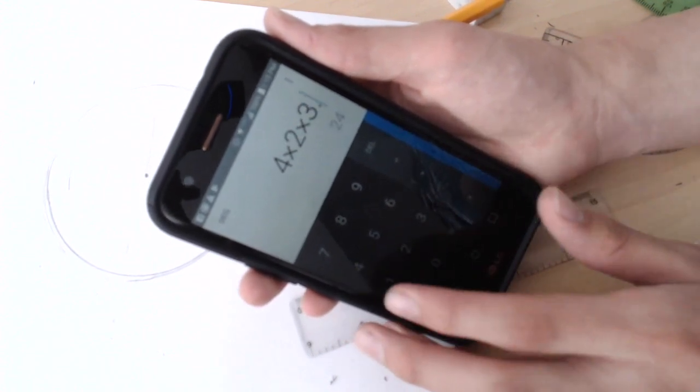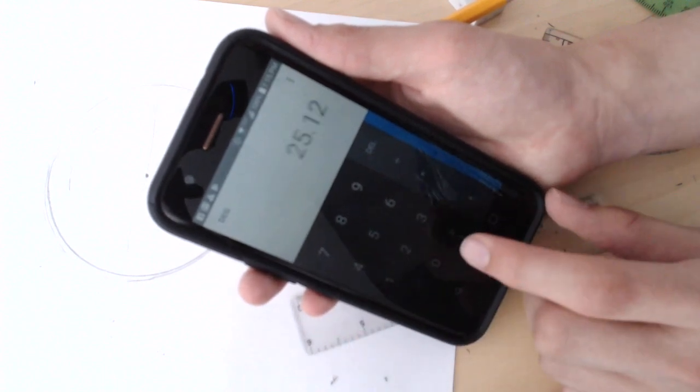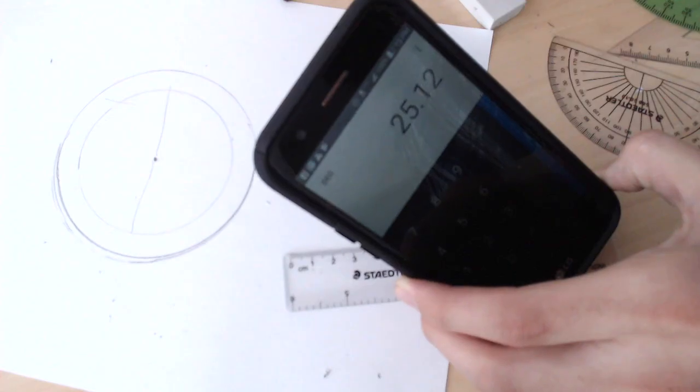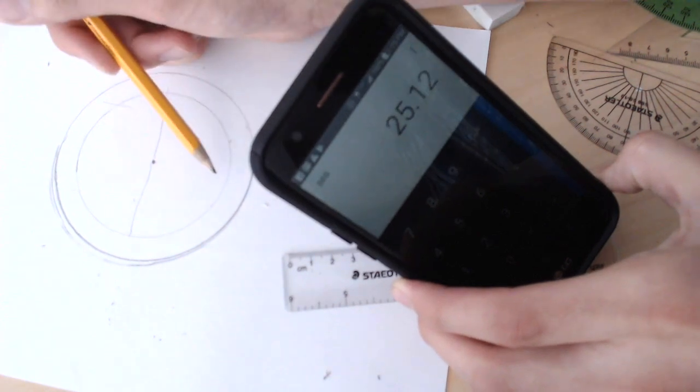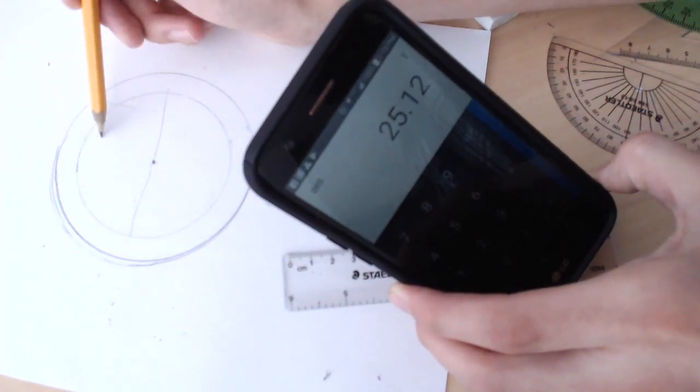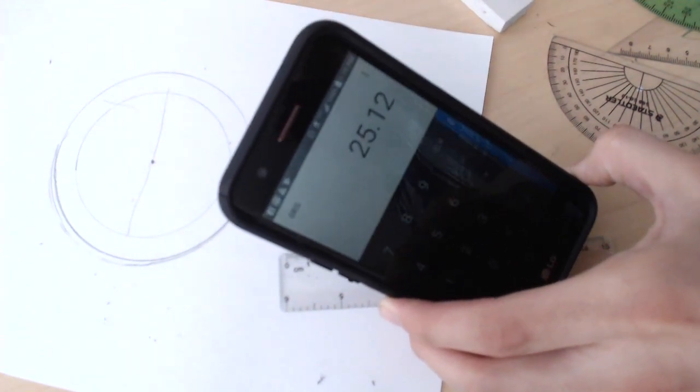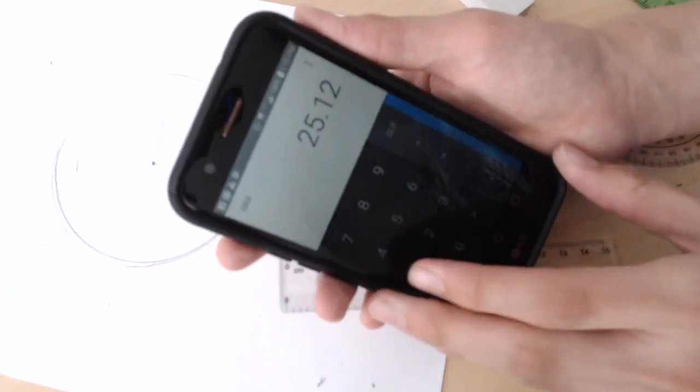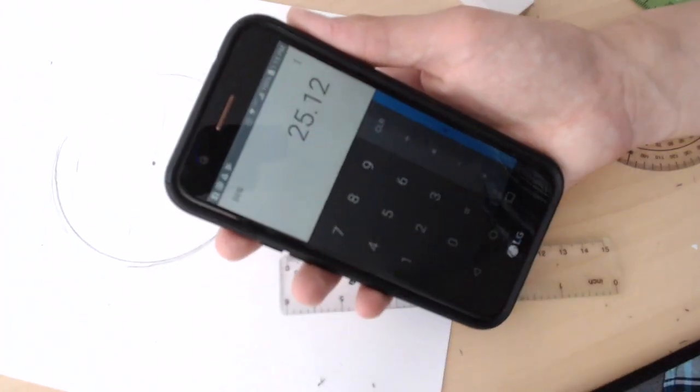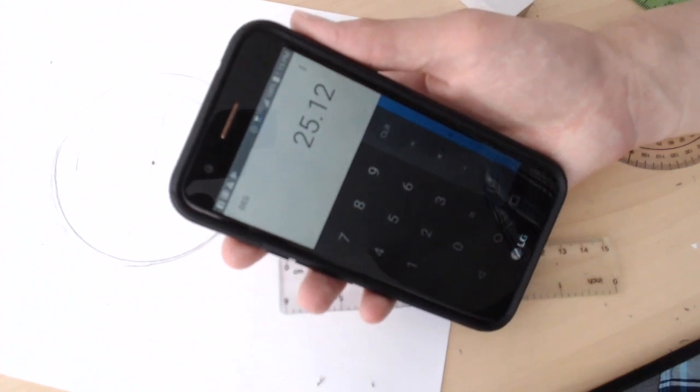So 3.14, and the circumference of this interior circle right here is 25.12 centimeters. And now we can actually divide it into the number of teeth which we want.